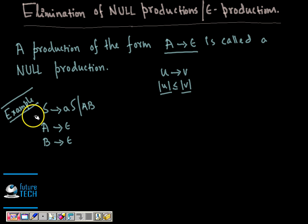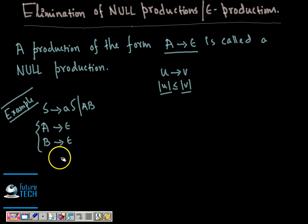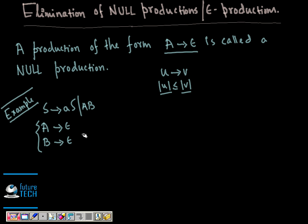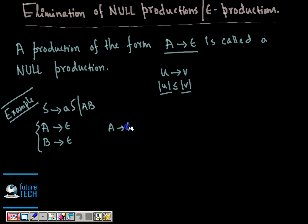Here we have the production rules: S → AS, S → AB, A → ε, and B → ε. We can clearly see that there are two epsilon productions: A → ε and B → ε. In order to eliminate these epsilon productions, we must incorporate their effect into the production rules — we may need to add some more production rules.